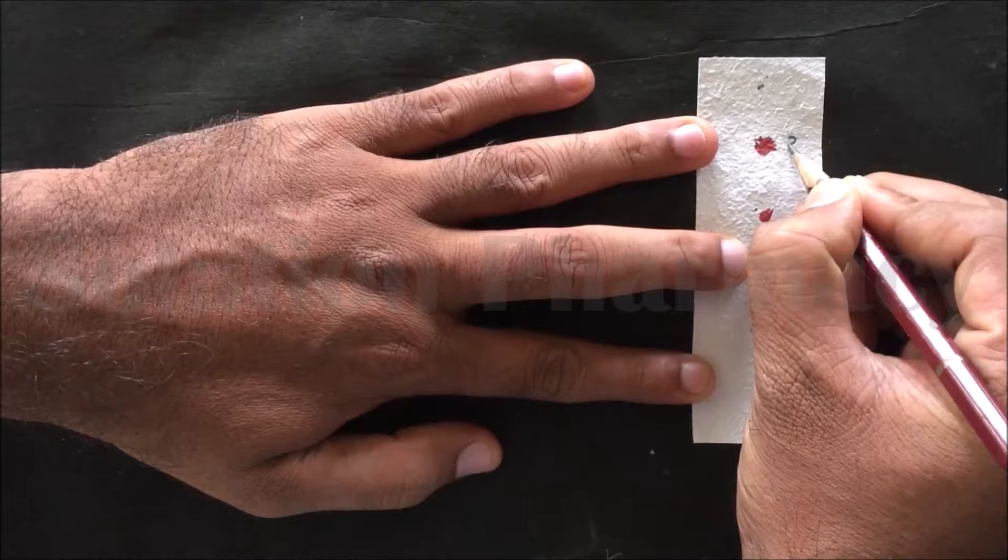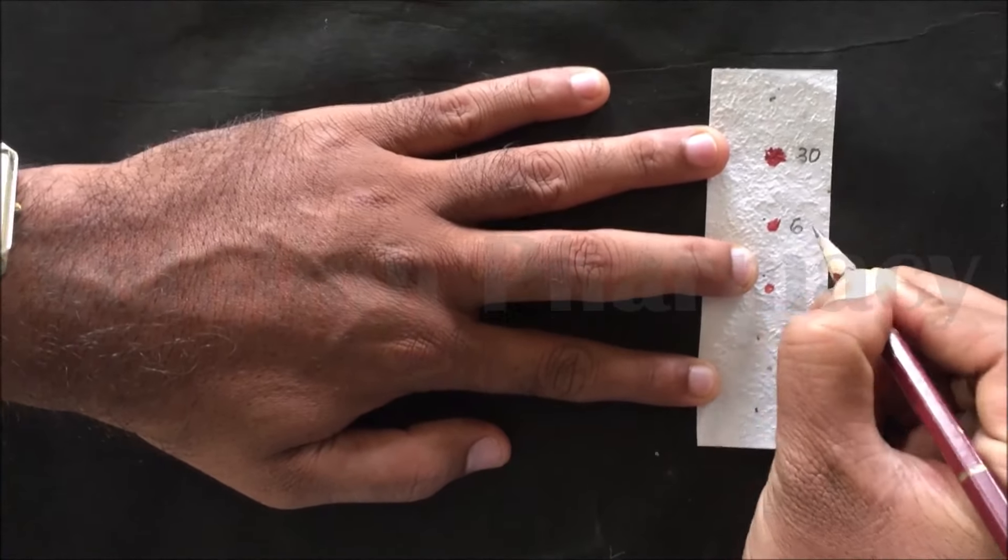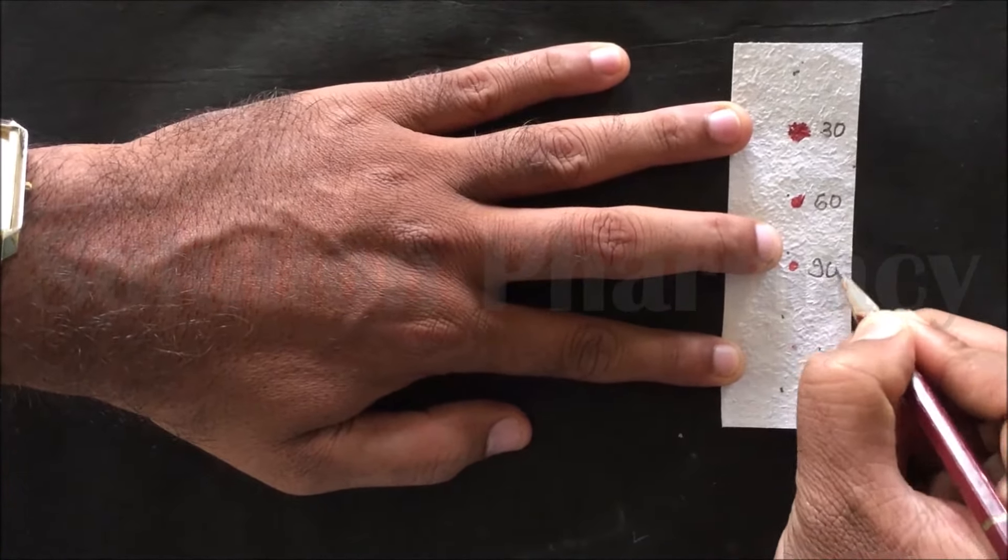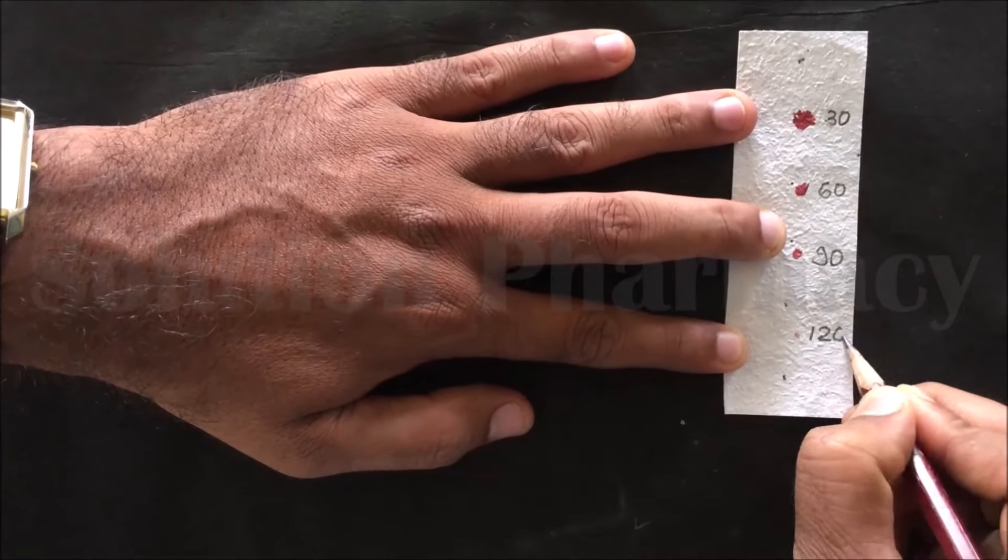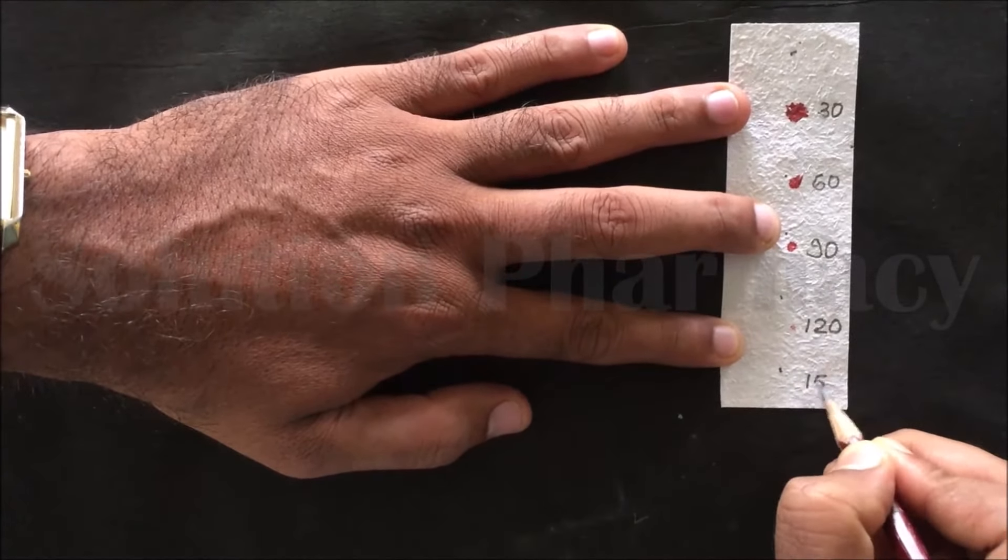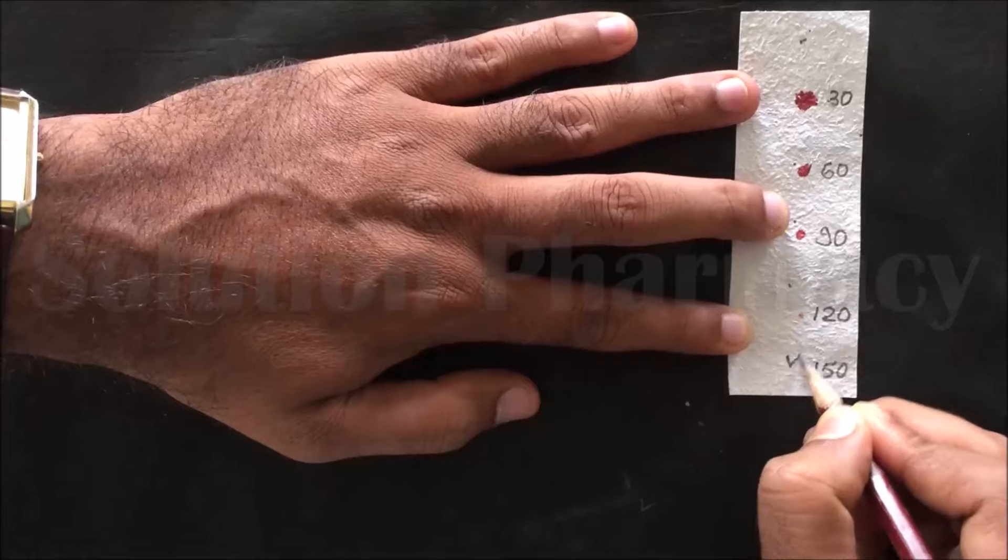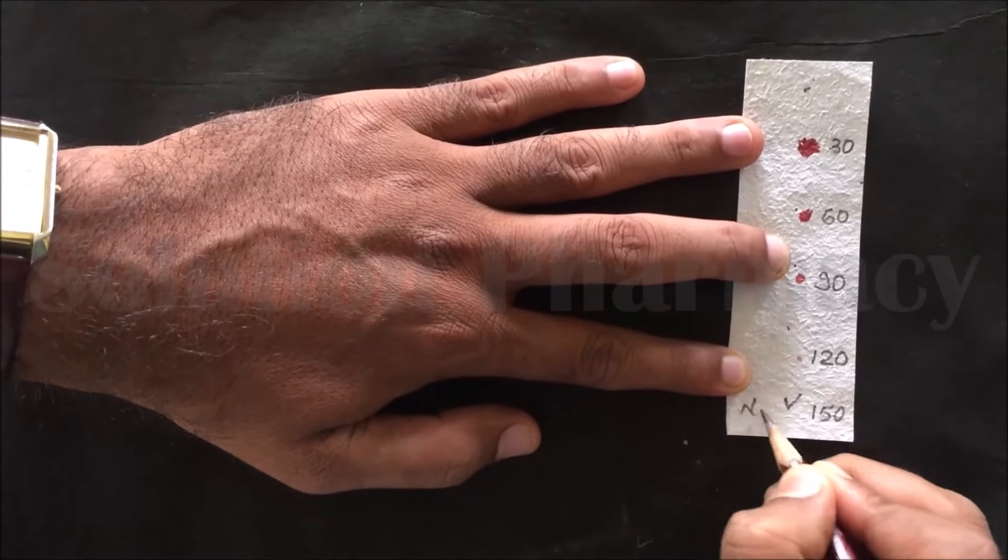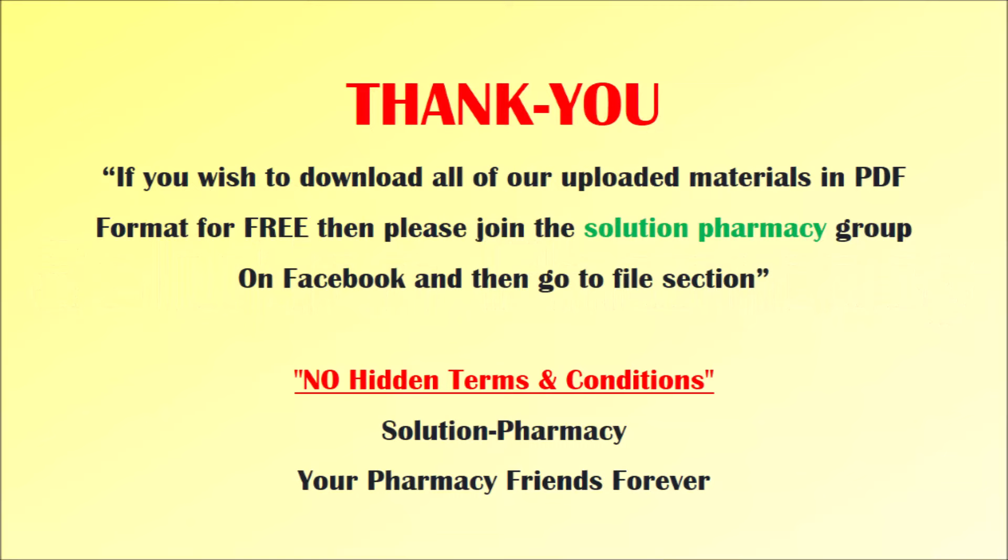Mark each spot of blood with the time after which we had applied it on the filter paper. Here the total time is 150 seconds. 150 seconds is the bleeding time, then express the bleeding time in minutes and seconds. Thank you very much for watching this video.